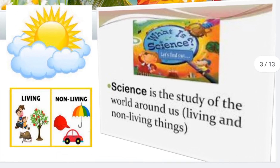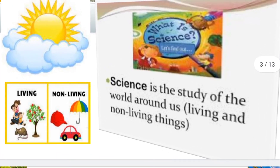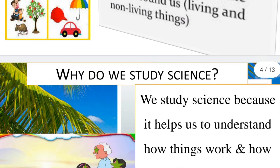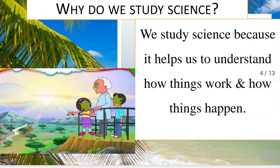Living and non-living things: living things are the things that are alive — they can reproduce, they can grow, they can eat, and they can move. Non-living things are the things that can't grow, can't reproduce, can't eat, and can't move. Reproduce means to give birth to babies.